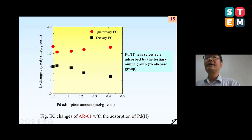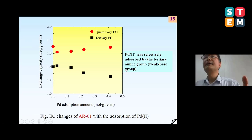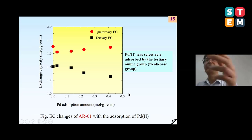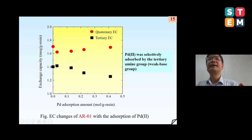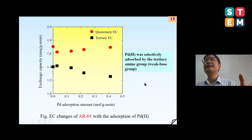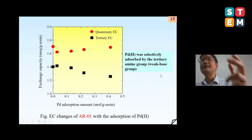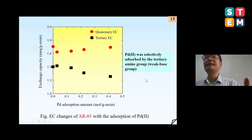We checked the adsorption behavior of AR01, which contains both weaker and stronger groups. As the adsorption amount increases, we found the quaternary amine group exchange capacity shows no change and keeps constant. However, the tertiary amine group exchange site declined and decreased with the adsorption amount increase. So it is very clear that the adsorption mechanism is due to the weak base groups through coordination actions.